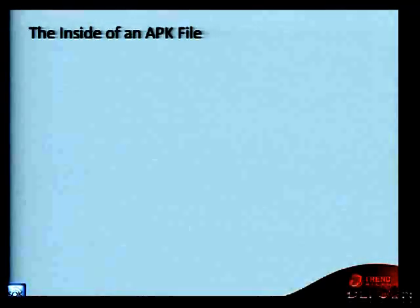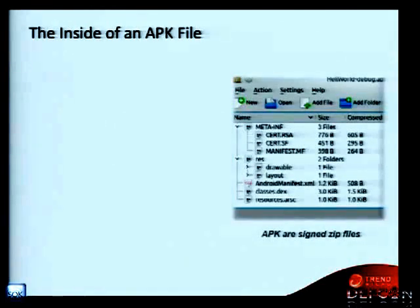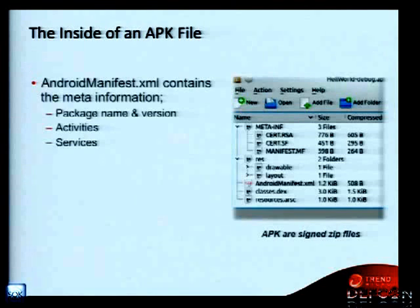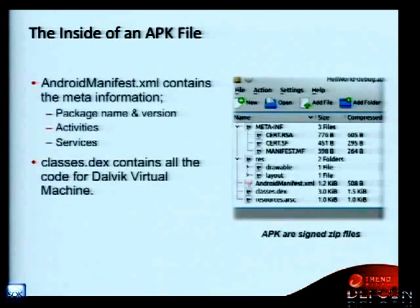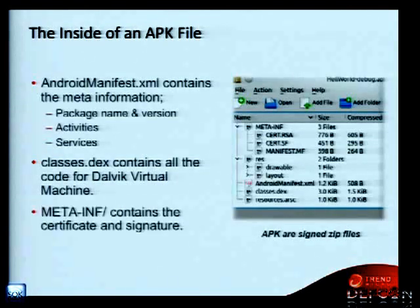I want to show you what happens to me and how I found the security risk. This year in March, one day I was playing a game on my Android phone and an advertisement popped up on my screen. I hated it, so I went to remove it. I looked inside the APK files. APKs are zip files containing the Android manifest XML — where you can find the package name, version, definitions for services, activities, and receivers — and the classes.dex, which contains the code for the Dalvik virtual machine. And the META-INF folder, where you can find the certificate and signature.